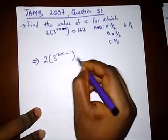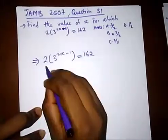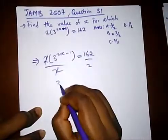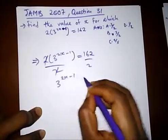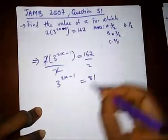All you need to do is just cancel out 2. Divide by 2, divide by 2, and we're left with 3 raised to 2x minus 1 equal to 81. Here let's convert this to the same base.